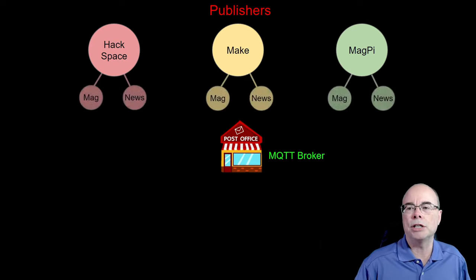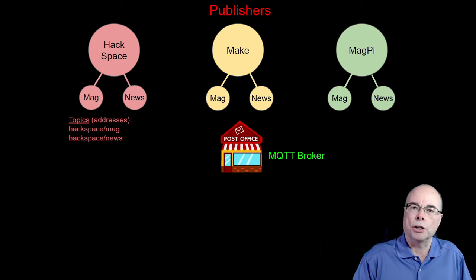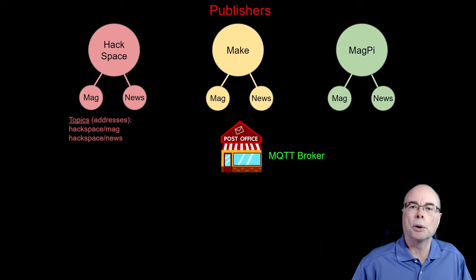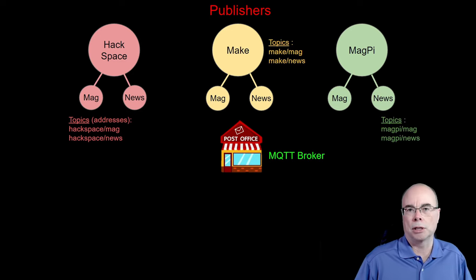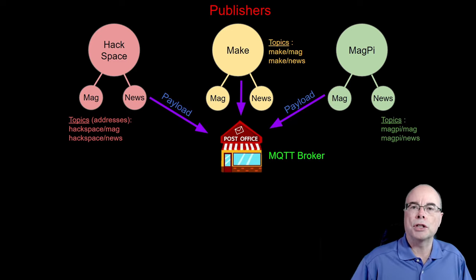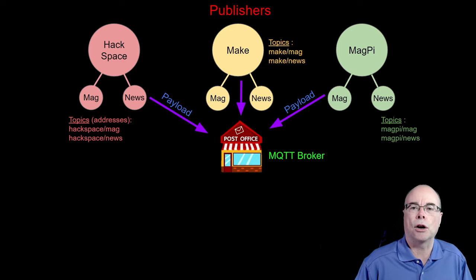Let's say each of these publishes a monthly magazine and a weekly newsletter. When they're ready to put out content, they apply what's called a topic to that message — instead of addressing it to a particular person. For example, Hackspace might use a topic of 'hackspace/mag' for their magazine and 'hackspace/news' for their newsletter. They address their message with a topic, then send the payload — the actual content of the message — off to the MQTT broker.